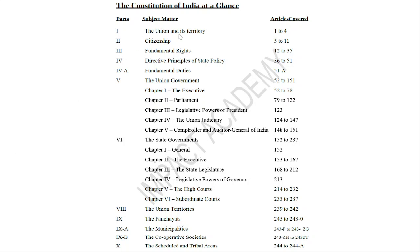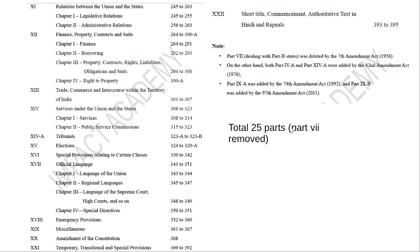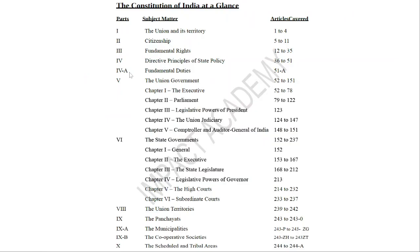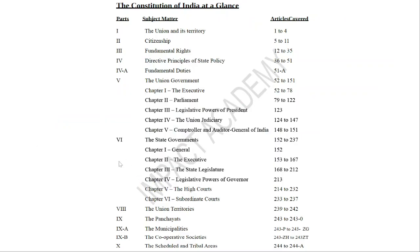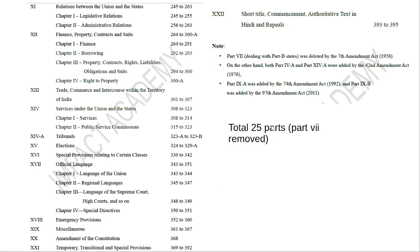All these parts are very important. Part 1 is Union and Territory. Part 2 is Citizenship. Part 3 is Fundamental Rights. Part 4 is DPSP. Part 4A is Fundamental Duties. There are currently 25 parts — initially there were 22, then 4A, 9A, 9B, and others were added, making 26, but Part 7 has been repealed, so 26 minus 1 equals 25. How many schedules? 12 schedules. How many parts? 25 parts. How many articles? 395 numbered articles, but with sub-parts there are around 448.